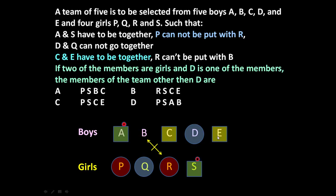If we take C we have to take E also, because C and E have to go together — that would give four boys, which is not permitted. Similarly, if we take E we must take C. So C and E cannot be selected for the team. Therefore, the third boy will be B.